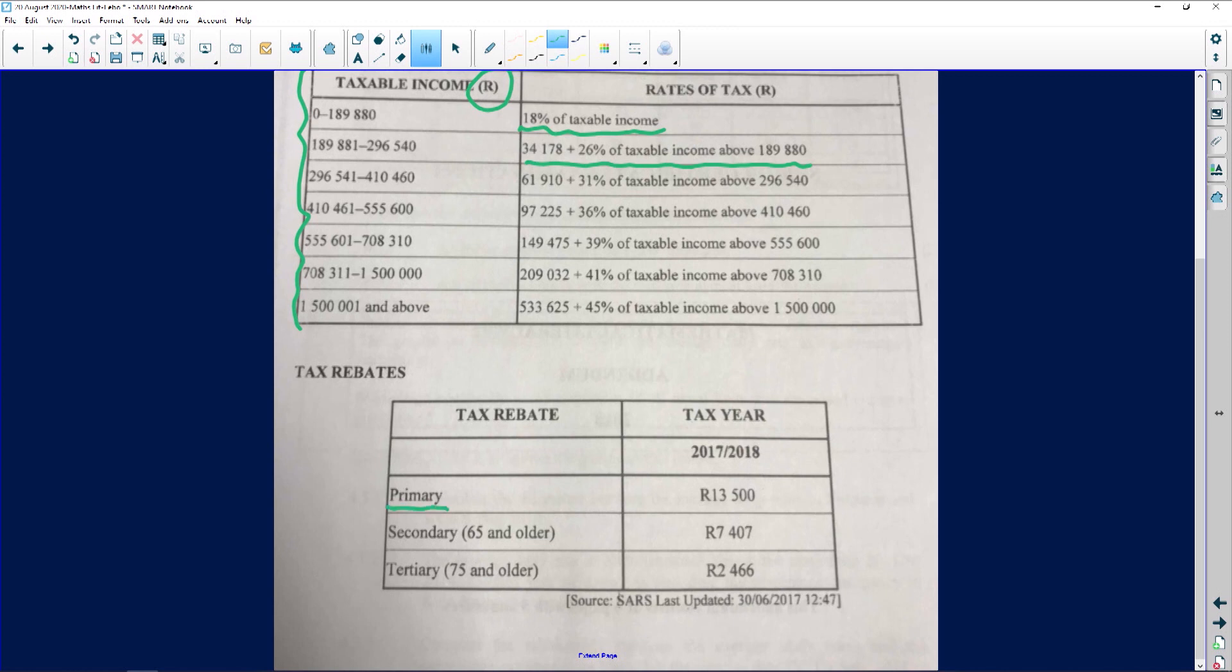Again, primary rebate - everyone qualifies for the primary rebate, R13,500. Don't think it's always going to be that. Secondary rebate R7,407. Again, don't cram it. Yes, the tax tables look the same and so on, but be super careful in terms of cramming it because you could be getting something totally different. Let's look at the question we've been given.